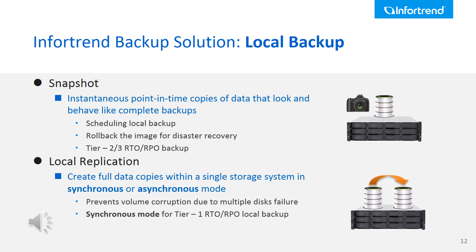However, when a disaster happens, there is no automatic rollback solution. Also, the storage system has a maximum number of scheduled snapshots an administrator can take. Strictly speaking, the snapshot feature only supports a Tier 2 RPO and RTO solution. Another data service is local replication, which allows creation of full data copies within a single storage system in synchronous or asynchronous mode between two volumes. It prevents volume corruption due to multiple disk failures, and with synchronous mode, data is instantly backed up from source to target volume, meeting Tier 1 RPO and RTO requirements.